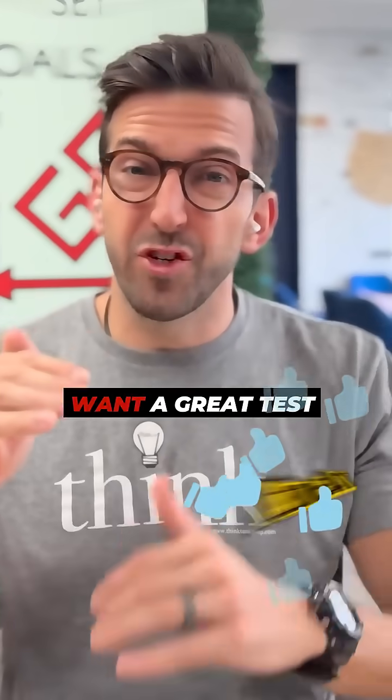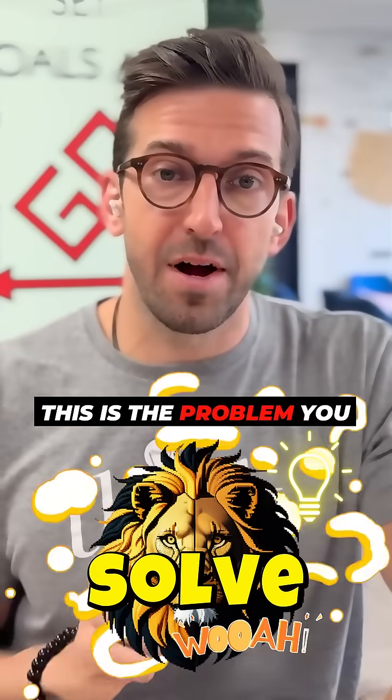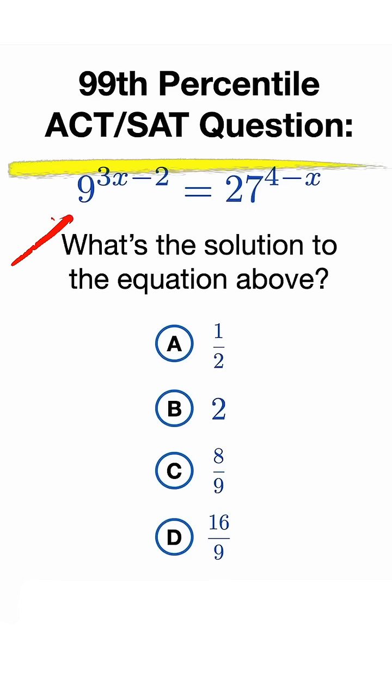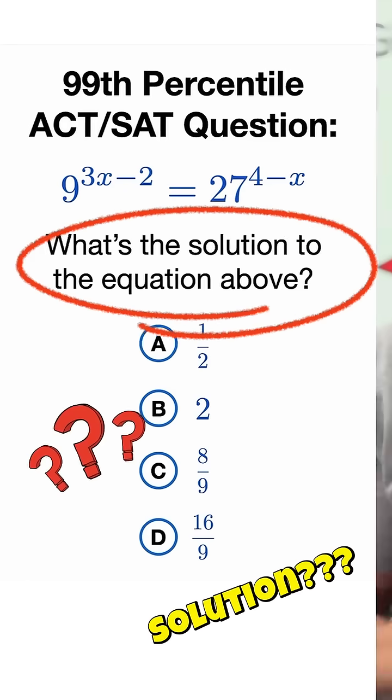If you've got a good test score but you want a great test score, this is the problem you need to figure out. You've got 9 to the 3x minus 2 power equals 27 to the 4 minus x power, so what's the solution to that?